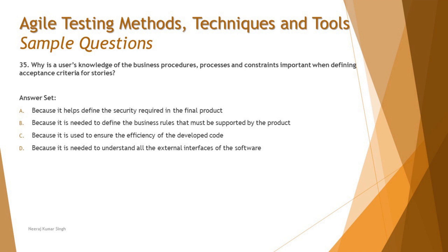Option A says: because it helps define the security required in the final product. Security is a non-functional characteristic. Business procedures, processes, and constraints relate to what the system should do and how it should function, not to security. Securing a product requires deploying firewalls, encryption, and other mechanisms — so this is not the right answer.